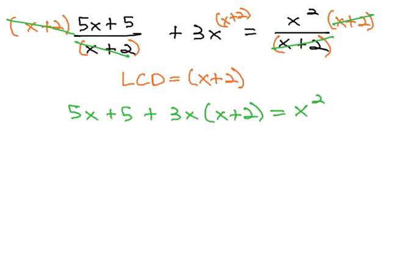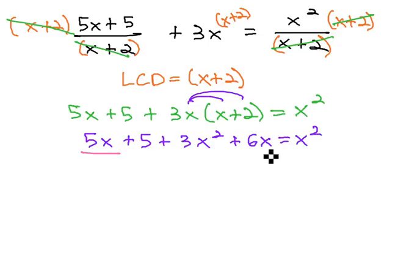We now have an equation with no fractions that we can solve like we have in the past. Start by distributing the 3, giving us 5x + 5 + 3x² + 6x = x². We can combine like terms of 5x plus 6x on the left side, so we now have 3x² + 11x + 5 = x².